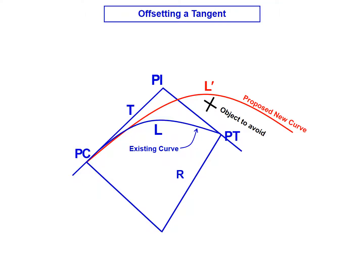In horizontal alignment, sometimes it's necessary to offset a tangent to avoid an object or obstacle, whether it's an environmental factor or something in the development or human environment. When this occurs, the curve needs to be realigned so that you can avoid whatever obstacle may be present.